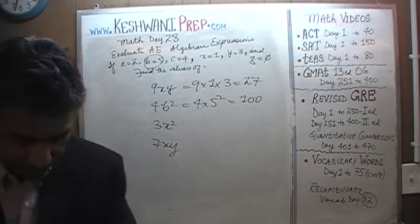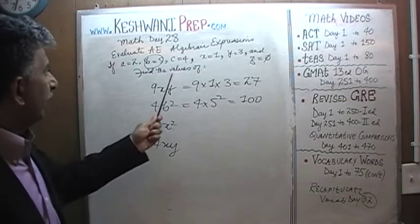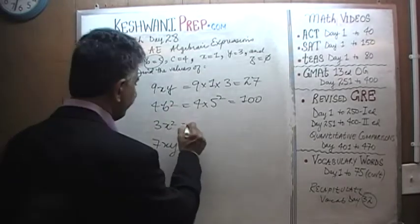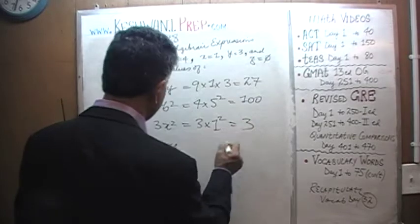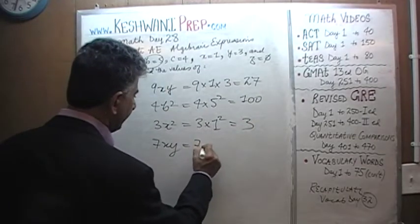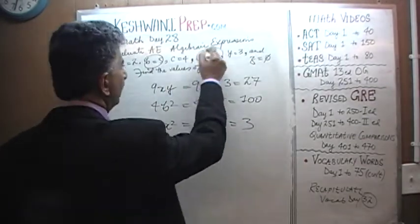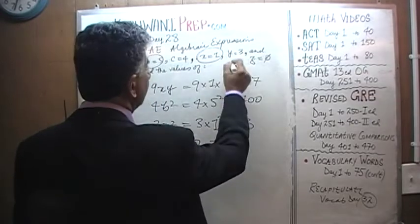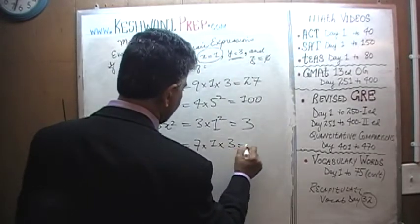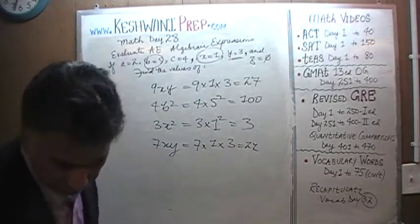3X squared. X squared is going to be 1 squared. 3 times 1 squared is just going to be 3. And 7XY. 7 times X. X is 1, times Y. Y is 3. It's going to be 21. Just a few more.